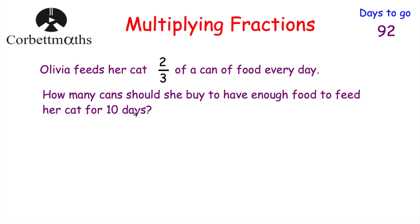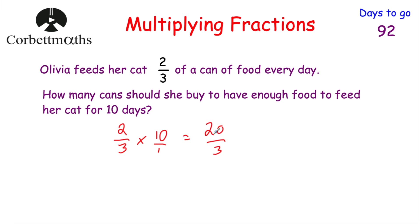Now let's have a look at a wordy question — feel free to pause and try it yourself. Olivia feeds her cat 2 thirds of a can of cat food every day. How many cans should she buy to have enough food for 10 days? She needs 2 thirds of a can per day, so we multiply 2 thirds by 10. That gives us 20 thirds. Converting to a mixed number: 6 threes is 18, so that's 6 remainder 2, meaning 6 and 2 thirds cans. But you can't buy 2 thirds of a can, so she needs to buy 7 cans.